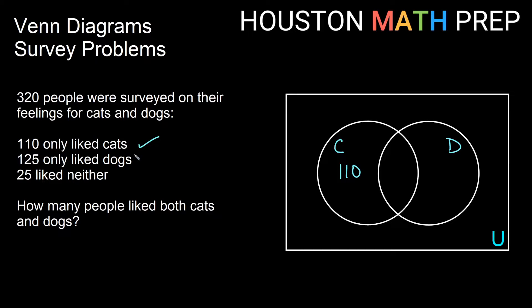125 only liked dogs, a similar thing. If they only liked dogs, they're in the D circle, but they're not in the intersection. So the 125 go out here. We also know specifically that 25 liked neither, and neither is very specific. That's going to be outside of both circles in our Venn diagram. So we've got that conquered there as well.